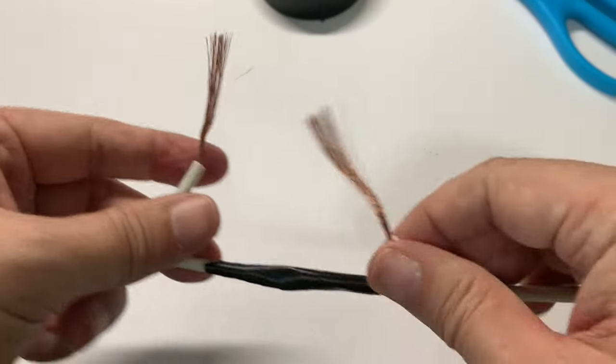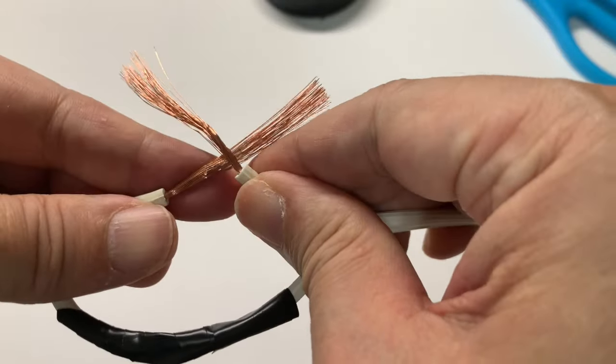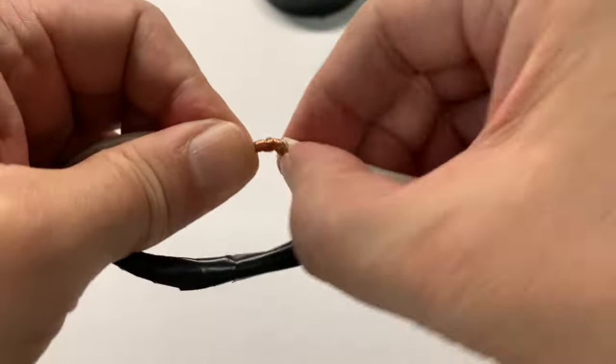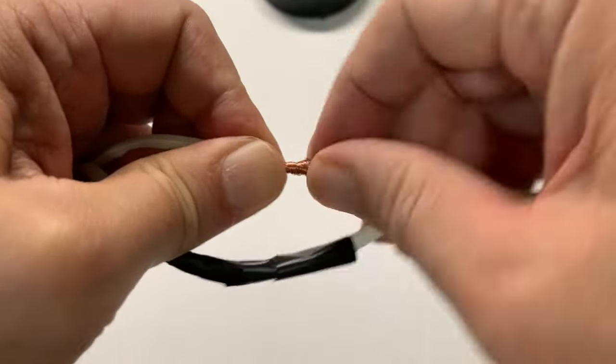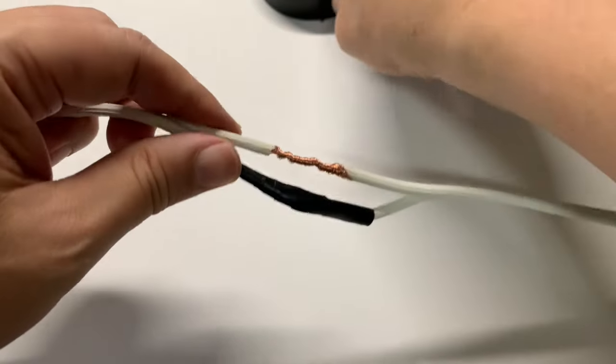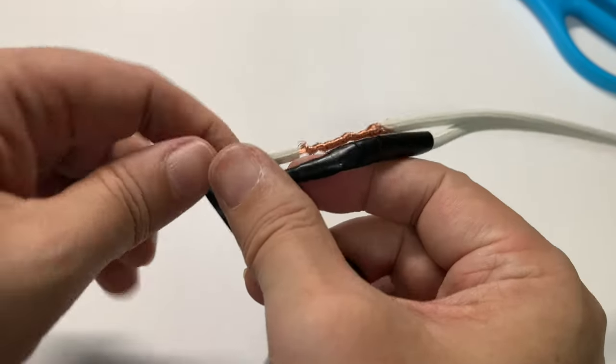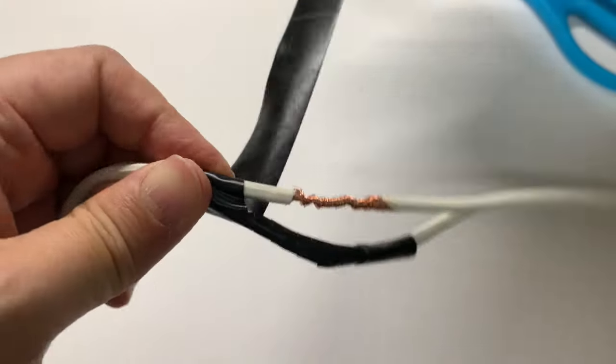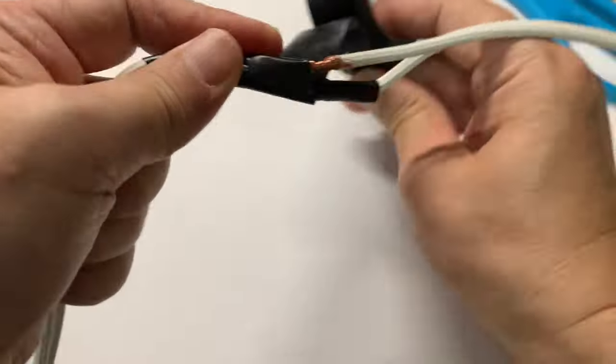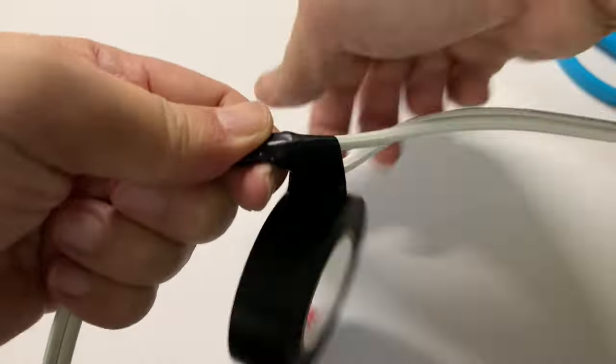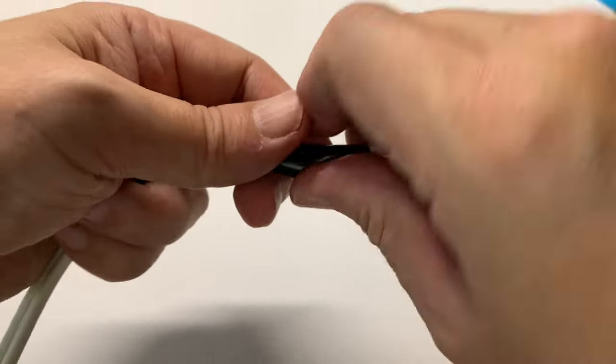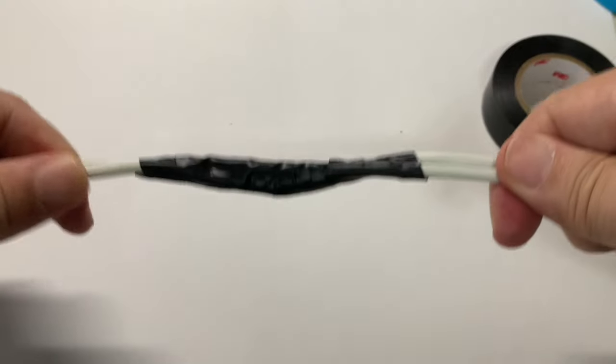Then splice the other pair of wires using the same method. When you're done with the other pair, tape both pairs of splices with an electrical tape together. Here you can see the splice is strong and ready.